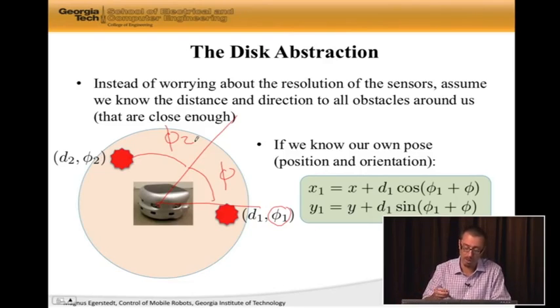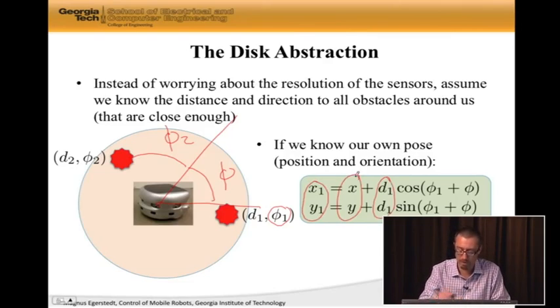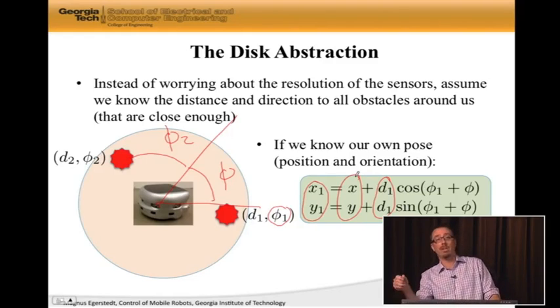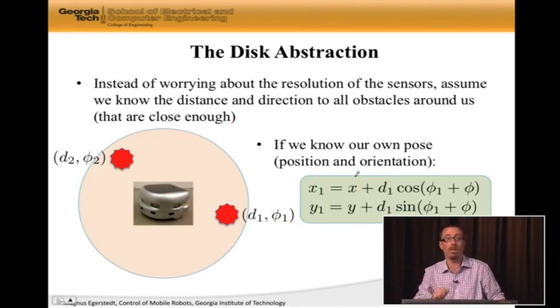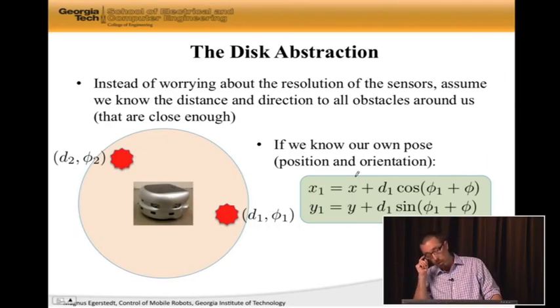Well, it's the position of the robot plus the distance to that obstacle times cosine and sine of this phi one plus phi term. So, we actually know globally where the obstacles are if we know where the robot actually is.